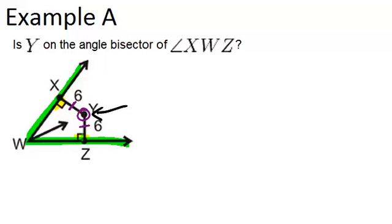And because Y is equidistant from both sides of the angle, it means it must be on the angle bisector of the angle. So therefore, to answer the question, yes, Y is on the angle bisector of angle XWZ.